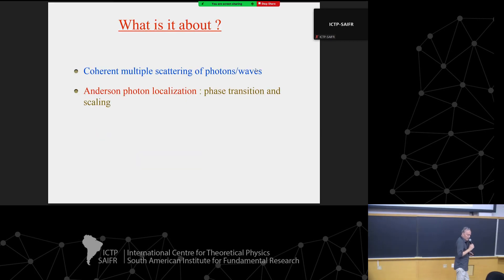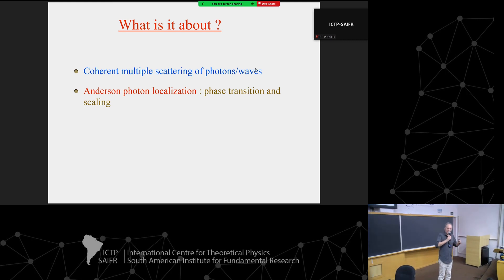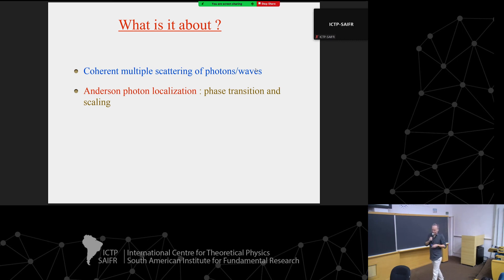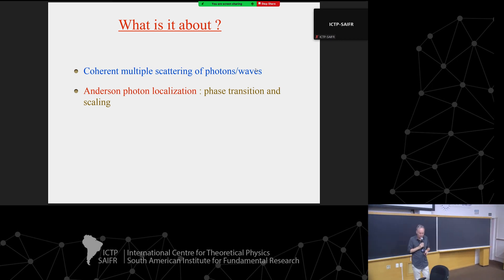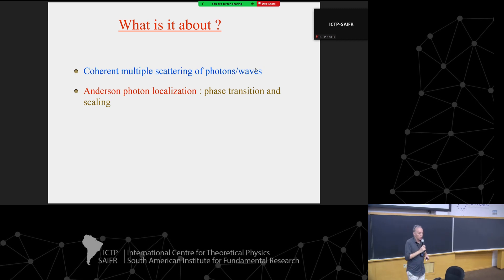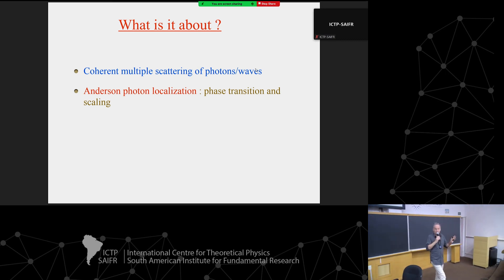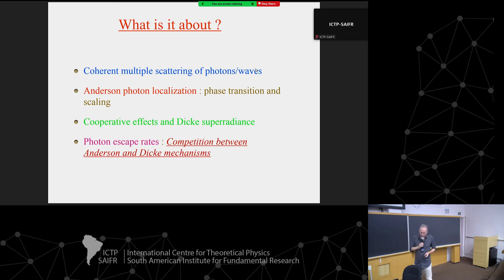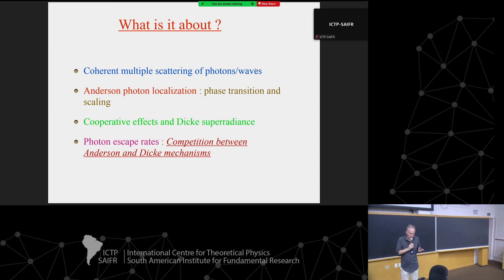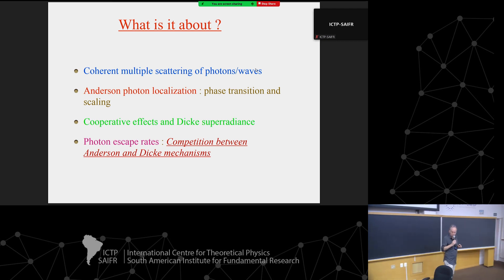This is work done with a PhD student at the Technion, and with collaborators Robin Kaiser and Louis Belando at INRS. So let's start — it will be didactic, I hope. So, what is it about? It's again coherent multiple scattering of photons or waves — here we will talk more about photons. And Anderson photon localization, which means phase transition. Is it possible to localize photons in the sense I described yesterday — scaling, Anderson localization, and all this?